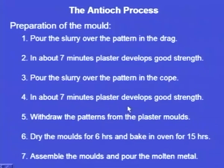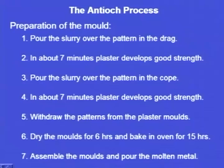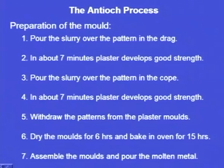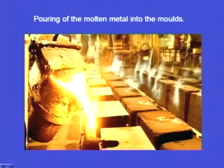Step by step: pour the slurry with the ingredients over the pattern in the drag. In about 7 minutes this plaster develops good strength — it takes only 7 minutes for setting. Pour the slurry over the pattern in the cope box also; again in about 7 minutes the plaster sets. Withdraw the patterns from the plaster moulds, dry the moulds for 6 hours, then bake them in an oven for 15 hours. Assemble the moulds and pour the molten metal.